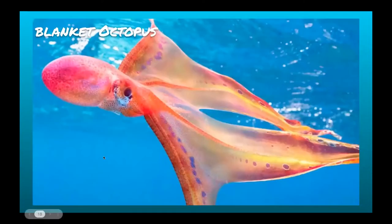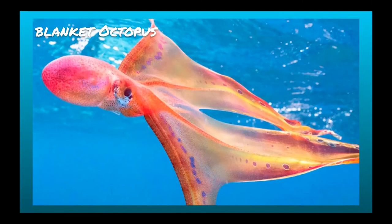Our last octopus is the blanket octopus. It has blanket-like webbing between its arms, which is used as a defense mechanism — not for warmth, but to spread out and appear larger to intimidate potential predators. Something very interesting: the female blanket octopus can get up to six feet long, while the male only gets to about 0.9 inches — less than an inch. There's a huge size discrepancy between the female and male, which is really interesting.